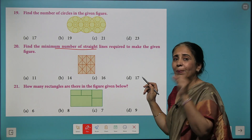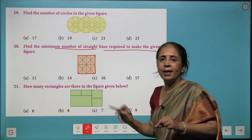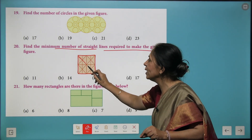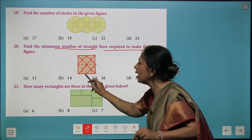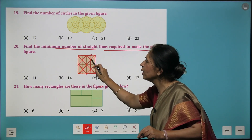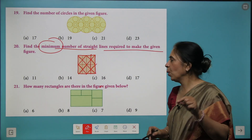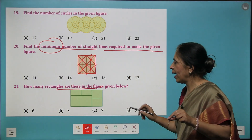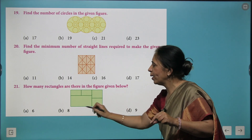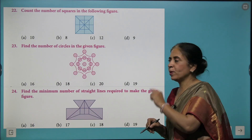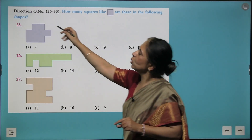Coming to the next question: how many minimum number of straight lines are required to form this figure? The entire figure is formed by joining straight lines — count the longer lines so you are not counting smaller segments, since the question asks for the minimum lines required. Then the next question: how many rectangles are there in this figure? Check carefully and don't get confused with squares. More similar questions are ahead for you to solve.